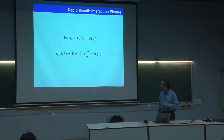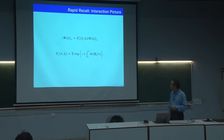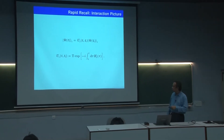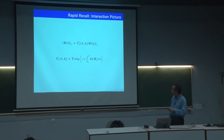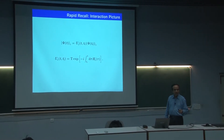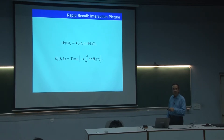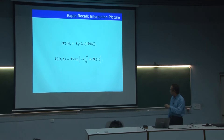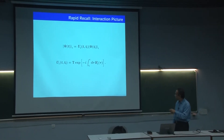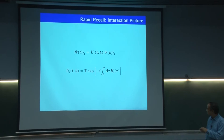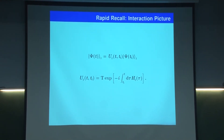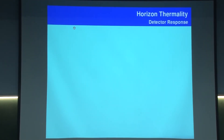Today we concluded at this point. In the interaction picture the evolution operator for a state is essentially this, and you do not have to worry about the time ordering because we are only going to look at lowest order. At lowest order it is 1 minus this quantity; 1 does not matter because it is going to be an identity operation. Essentially the integral of a time-dependent Hamiltonian between these two points is what will come.